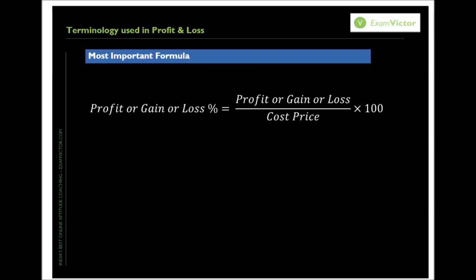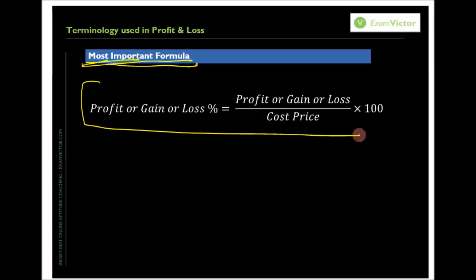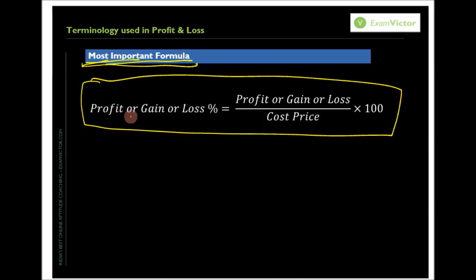Now that we've covered the basic terminology, I'll show you the most important formula in the whole profit and loss section: the formula for profit percent, gain percent, or loss percent. About 90 to 95% of questions are just twists on this formula. The profit percent is simply profit divided by cost price, multiplied by 100.